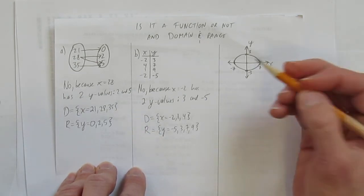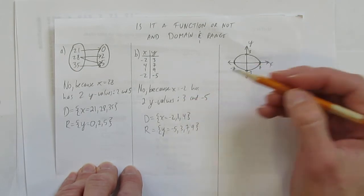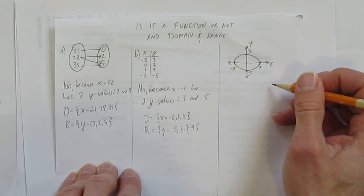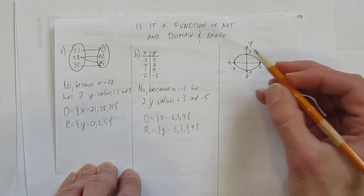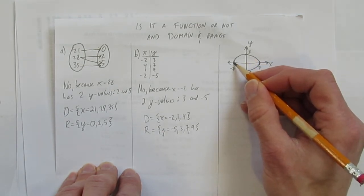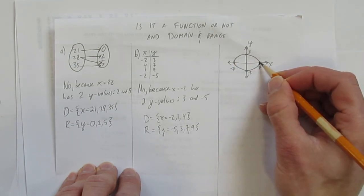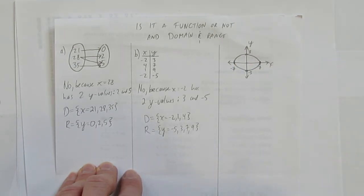Well, the answer is no, for a similar reason as last time, that there are a whole bunch of x's. And be careful, lots of times people put, every x has more than one y. That's actually not true. This x right here, negative 7, only has one y value, zero. This x right here, x equals 7, only has one y value, zero.